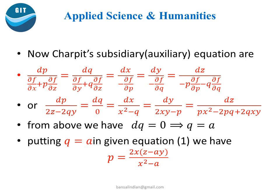Similarly, putting these values in Charpitt's auxiliary equation and simplifying, we get: dp / (2z − 2qy) = dq / 0 = dx / (x² − q) = dy / (−2xy − p) = dz / (px² − 2pq + 2qxy). From the second factor, we get dq = 0, which implies q = a.